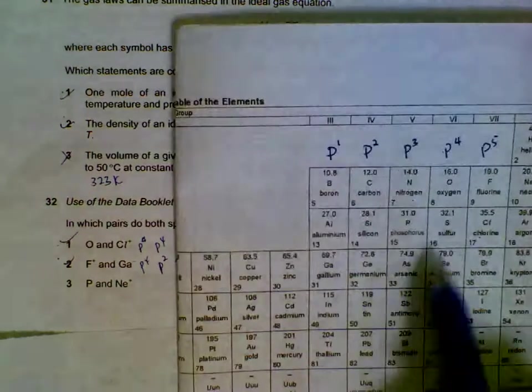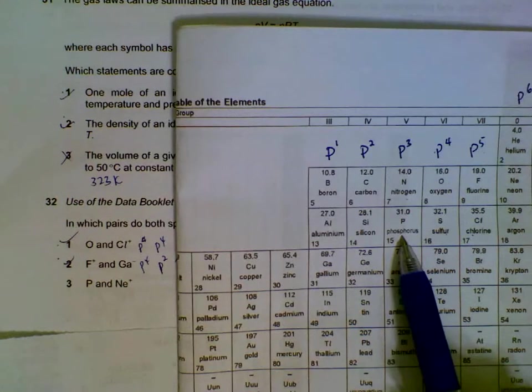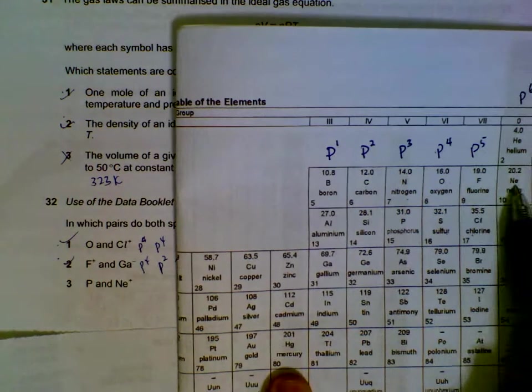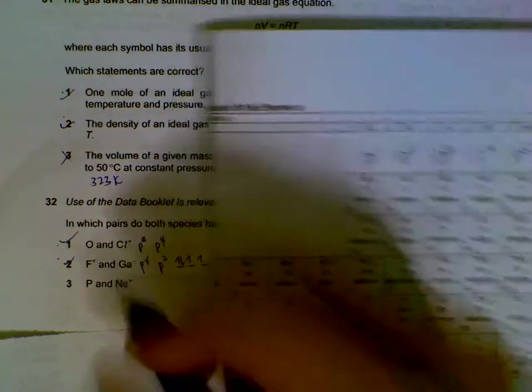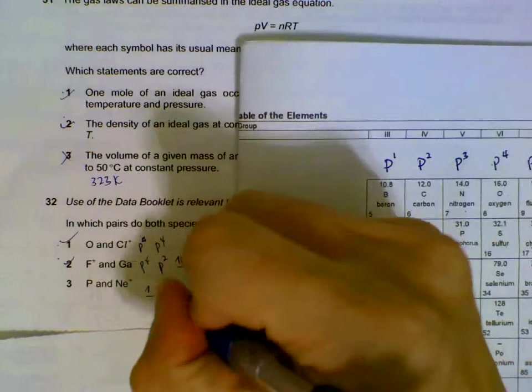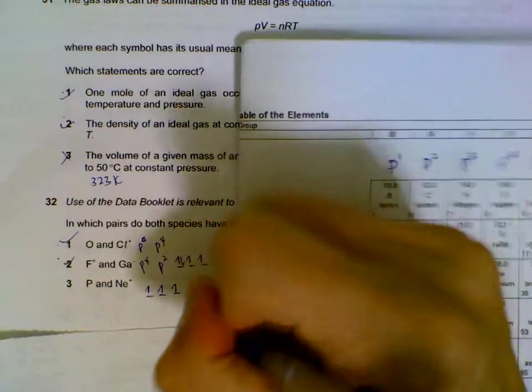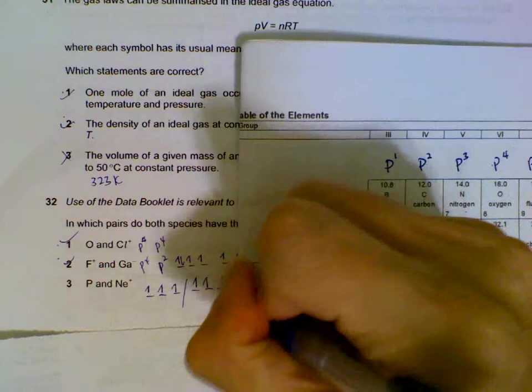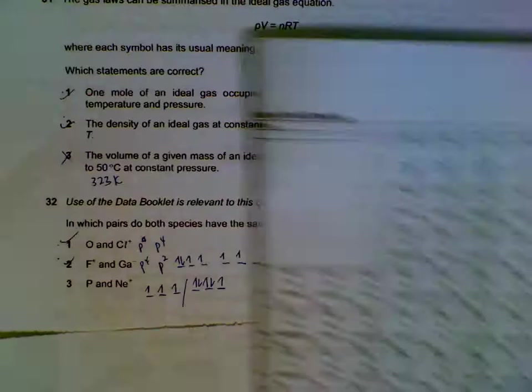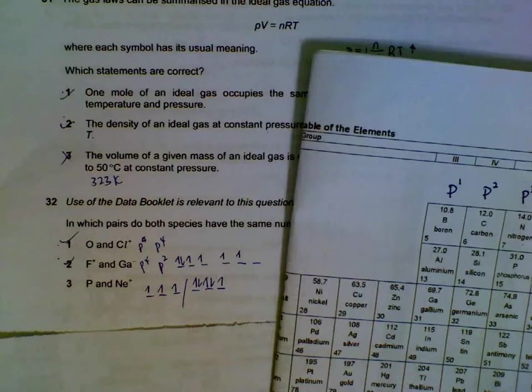Phosphorus P is P3. Neon+ is P6—it goes back one to be P5. So we have P3 versus P5. They do not have the same unpaired electrons.